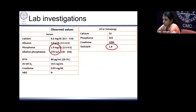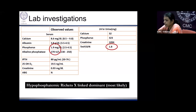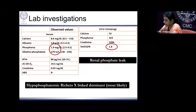Similar to the renal threshold for glucose at 180 mg/dL, there is a threshold for phosphate reabsorption. In certain inherited syndromes like hypophosphatemic rickets, this threshold is lowered, leading to a renal phosphate leak. That is what this boy and his mother had — hypophosphatemic rickets. The inheritance pattern in this case was X-linked dominant, the most common cause for inherited rickets, with an evident renal phosphate leak.